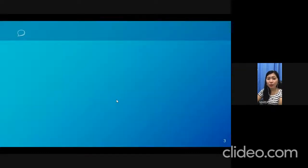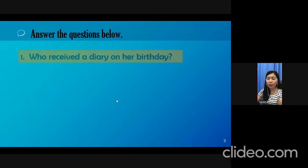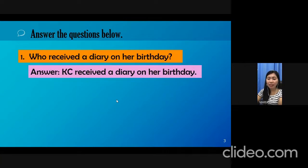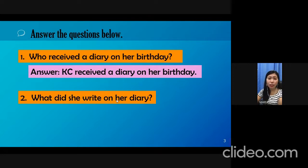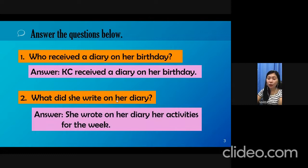Let's answer the questions that follow. First, who received a diary on her birthday? That's right. Casey received a diary on her birthday. Number two, what did she write on her diary? You're correct. She wrote on her diary her activities for the week.